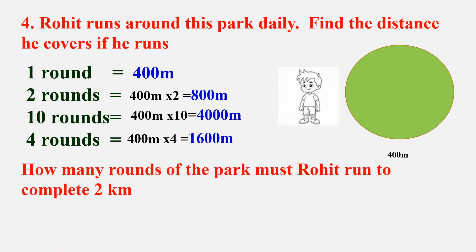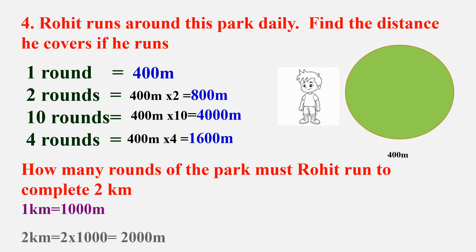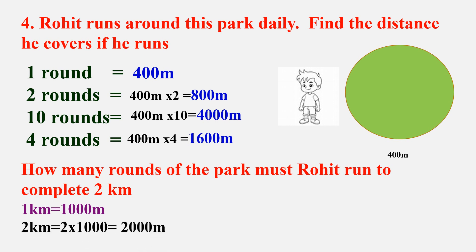Now the second part of the question: how many rounds of the park must Rohit run to complete 2 kilometers? We know 1 kilometer equals 1000 meters, so 2 kilometers equals 2 × 1000 = 2000 meters. We have to find how many 400s are there in 2000, so we divide 2000 by 400.